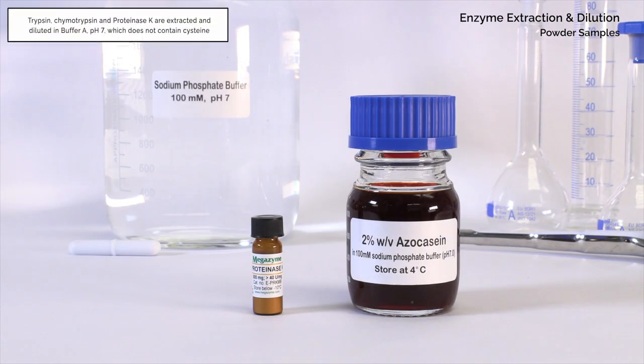Trypsin, chymotrypsin, and proteinase K are extracted and diluted in buffer A, pH 7, which does not contain cysteine.